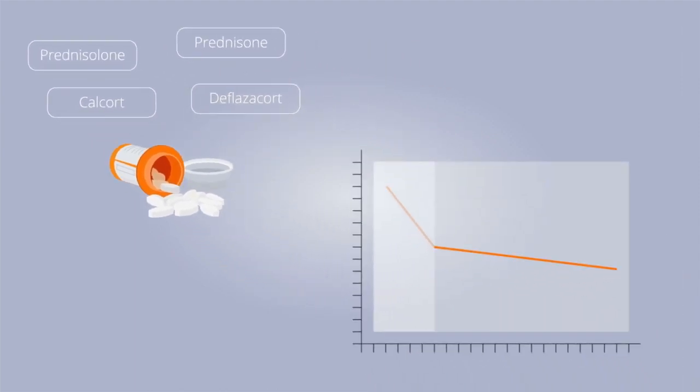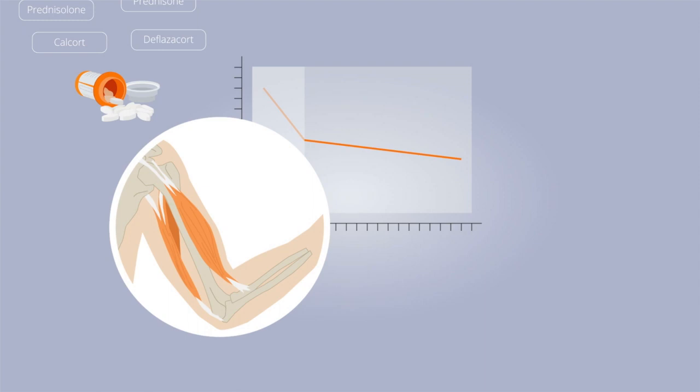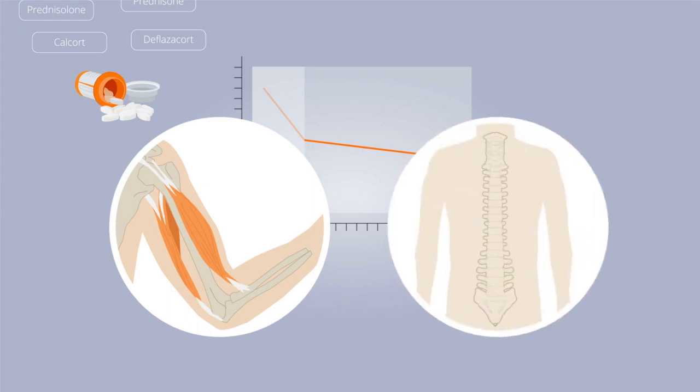The goal of steroid use is to help continue walking longer, preserve upper limb strength and breathing, and to help keep the spine straight.